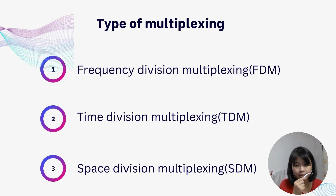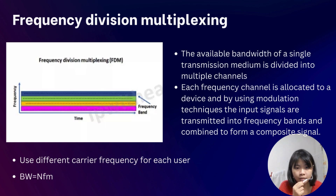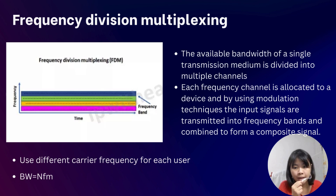There are three types of multiplexing: Frequency Division Multiplexing (FDM), Time Division Multiplexing (TDM), and Space Division Multiplexing (SDM). For FDM, the available bandwidth of a single transmission medium is divided into multiple channels. Each frequency channel is allocated to a device, and by using modulation techniques, the input signal is transmitted into a different frequency band and combined to form a composite signal. The bandwidth of FDM equals n times fm, where n is the number of sub-carriers being used.